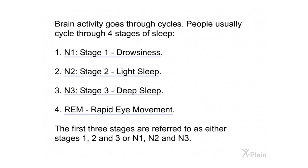People usually cycle through four stages of sleep: stage one, drowsiness; stage two, light sleep; stage three, deep sleep; and stage four, REM — rapid eye movement. The first three stages are referred to as either stages one, two, and three, or N1, N2, and N3.